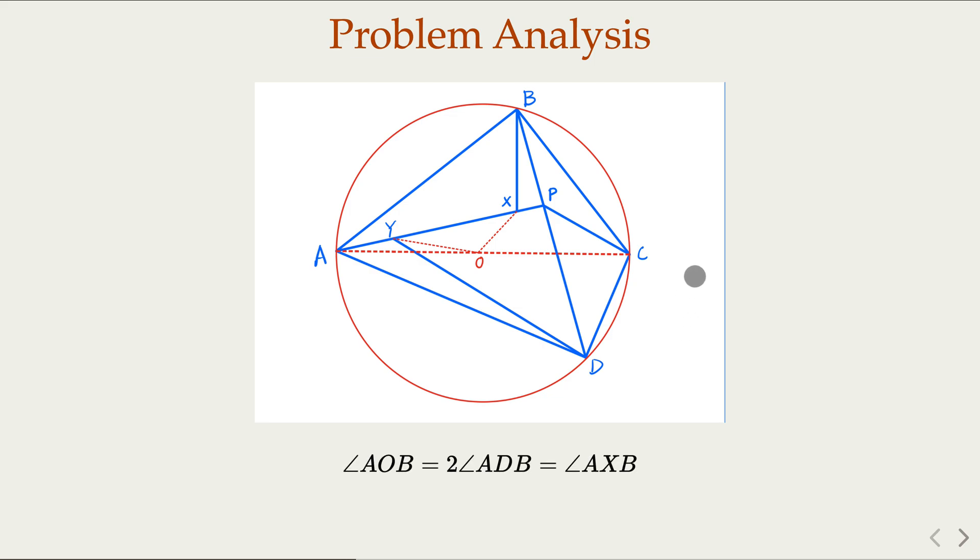Let's start with the given fact that the angles have a certain relationship. We claim that AOB, the inner angle of the circle, is twice angle BDA, or ADB. Earlier, we're given that ADB is half of the big angle AXB.